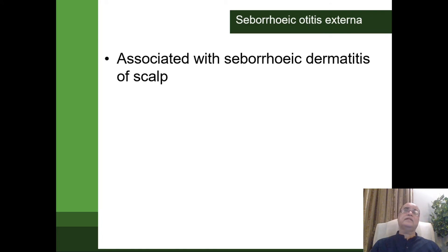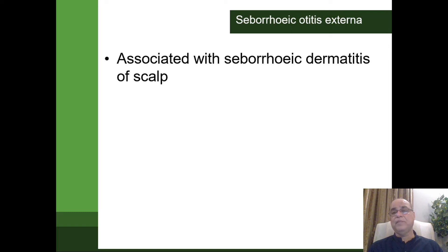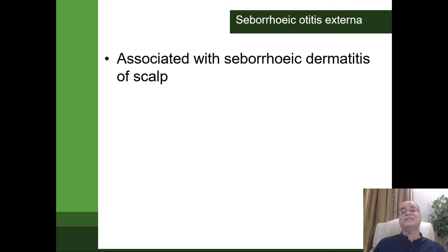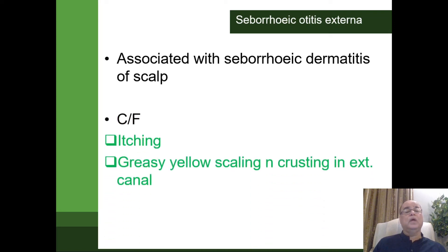The second entity is seborrheic otitis externa. This is almost always associated with seborrheic dermatitis of the scalp, because the skin lining the neighborhood of the ear in the scalp is the same skin lining the external ear. In layman's terms it is called dandruff, so it is almost always associated with dandruff of the scalp. The patient will present with itching, and there will be greasy yellow scaling and crusting not only in the external auditory canal but also in the pinna, in the post-auricular groove, and in the scalp.